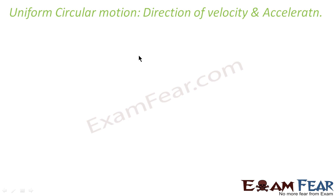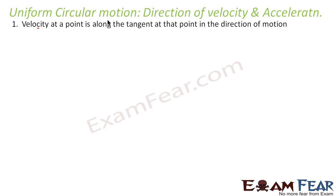Now we'll talk of another topic: uniform circular motion. We have discussed the same topic in motion in one dimension, but now we will look at it considering vector quantities in two dimensions. We'll talk of velocity and acceleration and their directions in case of uniform circular motion.